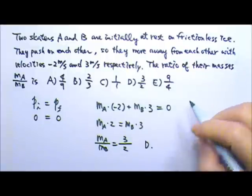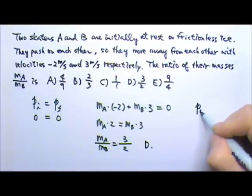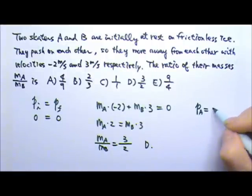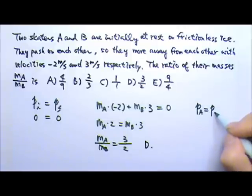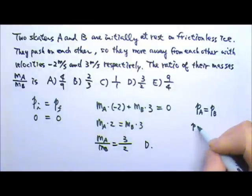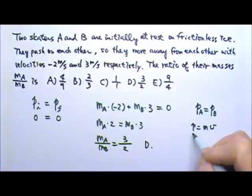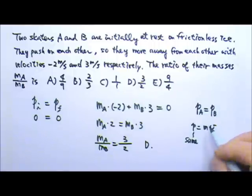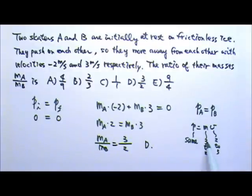Or we can say that since the amount of momentum of A has to equal the amount of momentum of B and the momentum is M times V, they have to have the same amount of momentum. So if the velocity is 2 to 3, that means the mass must be 3 to 2, so that M times V would be the same amount.